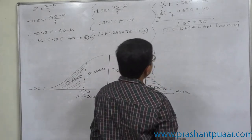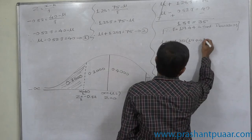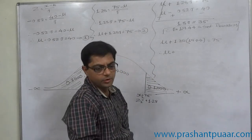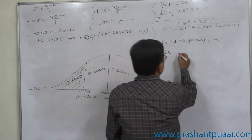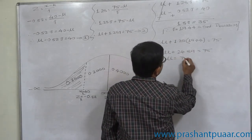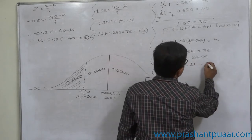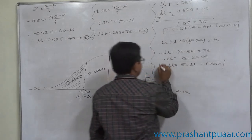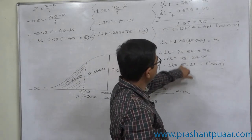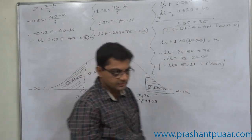Now substitute sigma equals 19.44 into equation two: mu plus 1.28 times 19.44 equals 75. The multiplication of 1.28 and 19.44 gives approximately 24.89. So mu equals 75 minus 24.89, which gives mu approximately equal to 50.11. This is the mean of the data. Therefore, the average marks of the students are approximately 50 and the standard deviation is 19.44. Since marks are taken as integers, the mean is 50 marks.